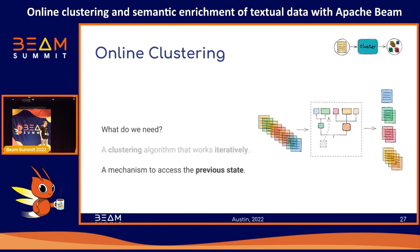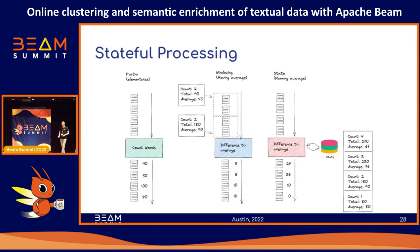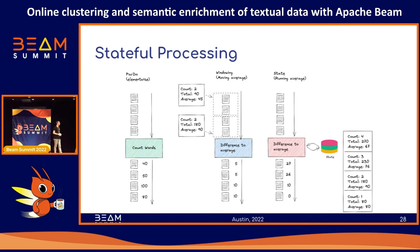The first ingredient for online clustering — a clustering algorithm that works iteratively — is done with BIRCH. Next, we need some mechanism to access the previous state. This has been seen throughout the conference, and I would invite you to the talk about caching with Apache Beam, which contains these methods and several others.